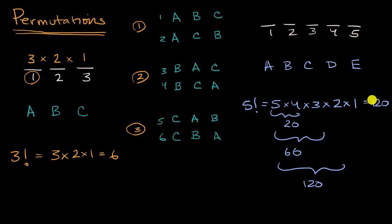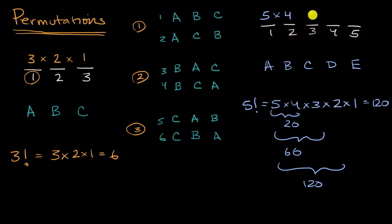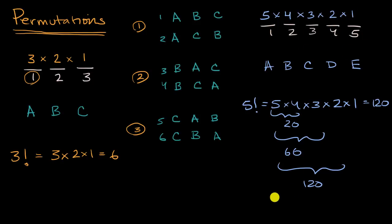And that makes a lot of sense. There are five different possibilities for seat number one. For each of those, there are four people who could sit in seat number two. For each of those 20 possibilities, there are three people who could sit in seat number three. For each of those 60 possibilities, there are two people for seat number four. And once you know who's in the first four seats, you know who has to sit in the fifth seat. That's where we get 120.